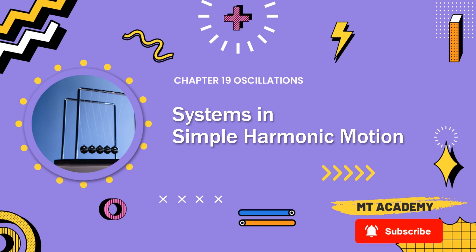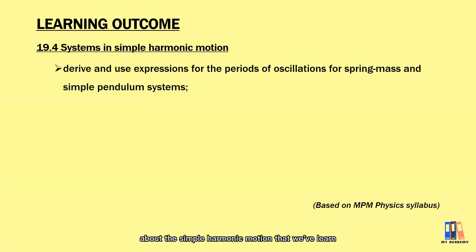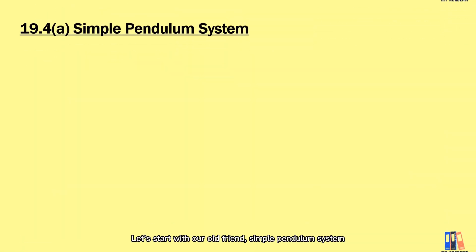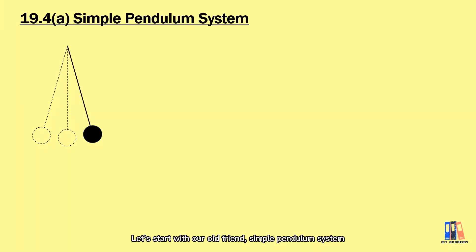Good day and welcome back. We'll continue with Chapter 19, Systems in Simple Harmonic Motions. We have learned a lot about simple harmonic motions — the displacement, velocity, accelerations, and the energy in the systems. Now we're going to learn how to derive the periods of oscillations, especially for the spring-mass and the simple pendulum systems. Let's start with our old friend, the simple pendulum system.